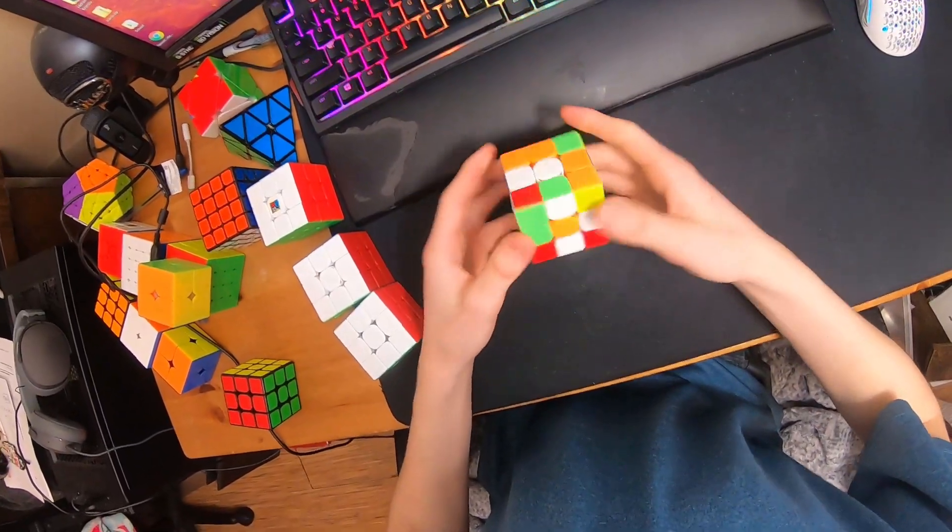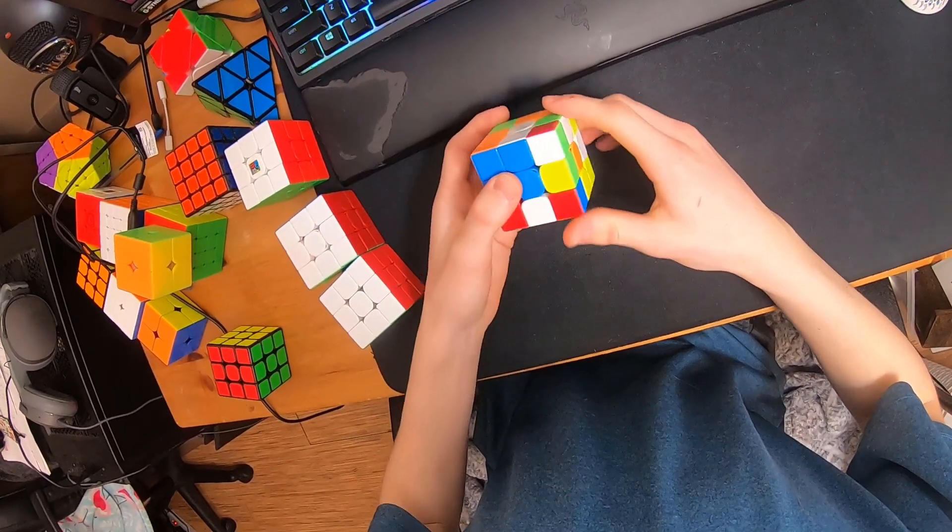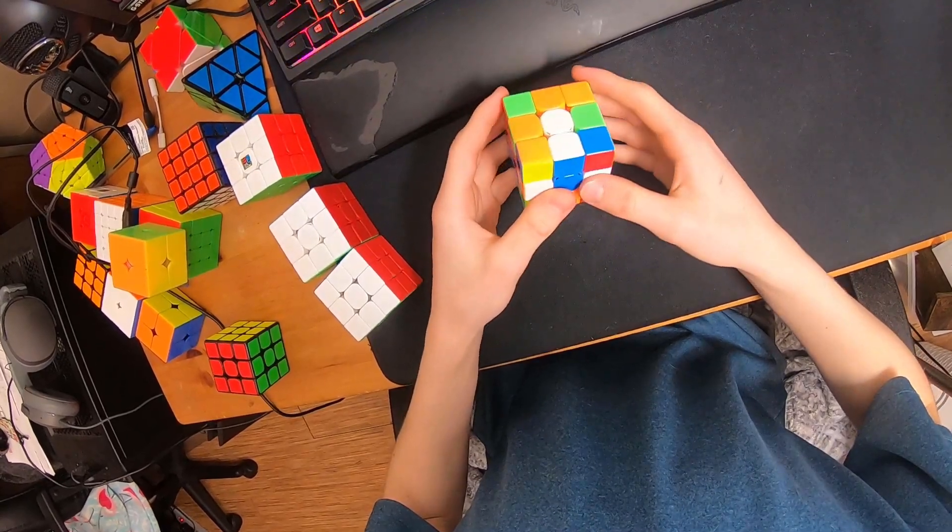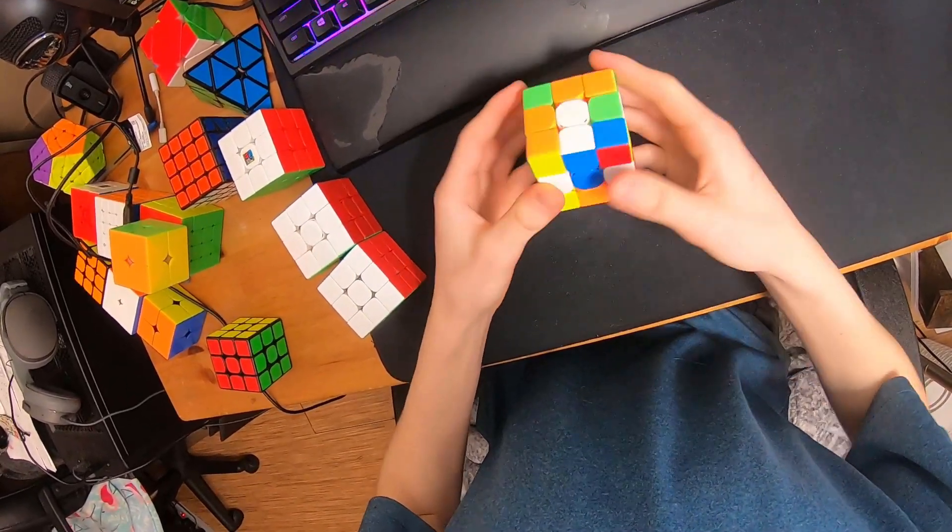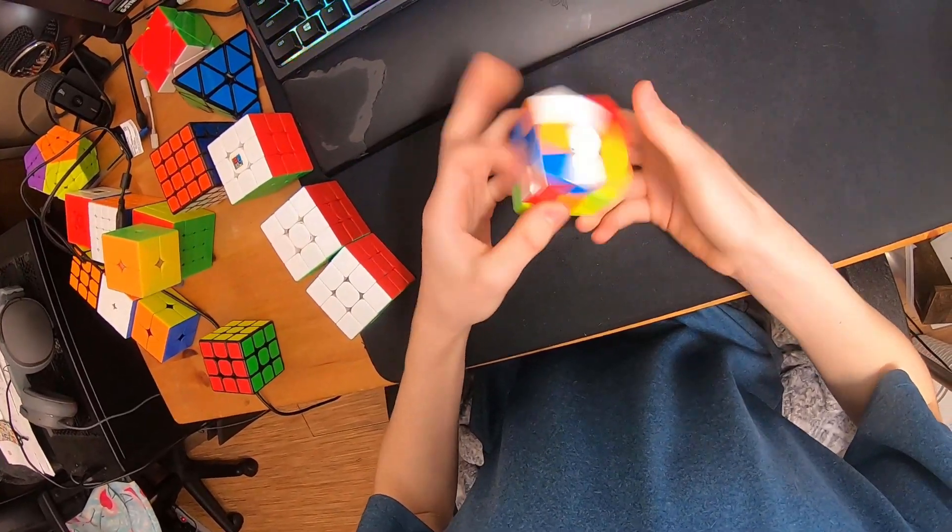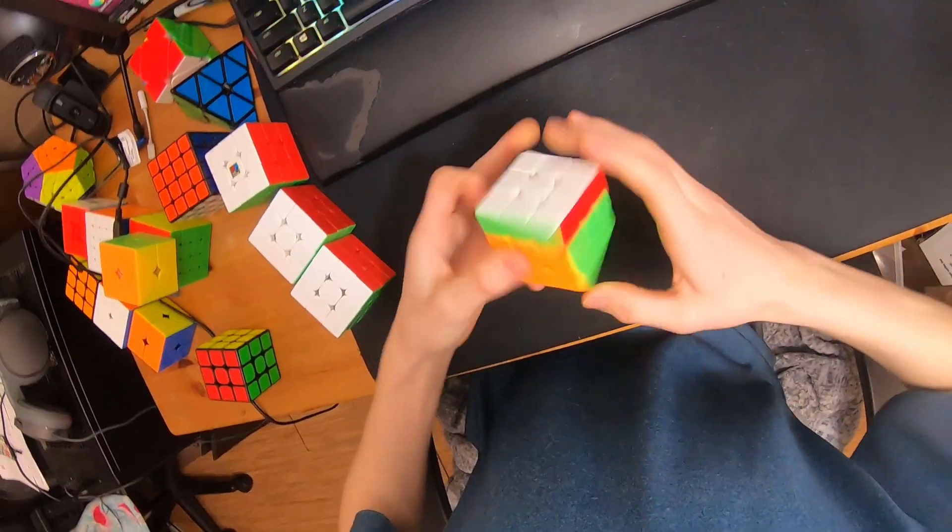So this one was 4.1, and I did a yellow x-cross. Start, insert these two, rd'fr', and then insert this corner, rotate this pair, solve these two, solve these two, solve these two.